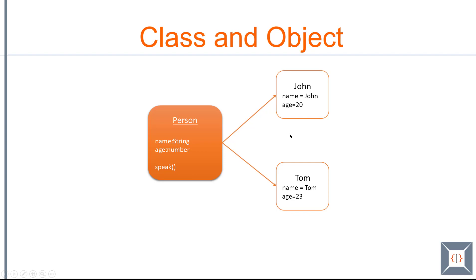When you create an object, you can have data specific to each object and share all the behaviors from the class. In this case we share the behavior called speak because we don't have specific versions of speak for each object. Let's see some examples for this now.